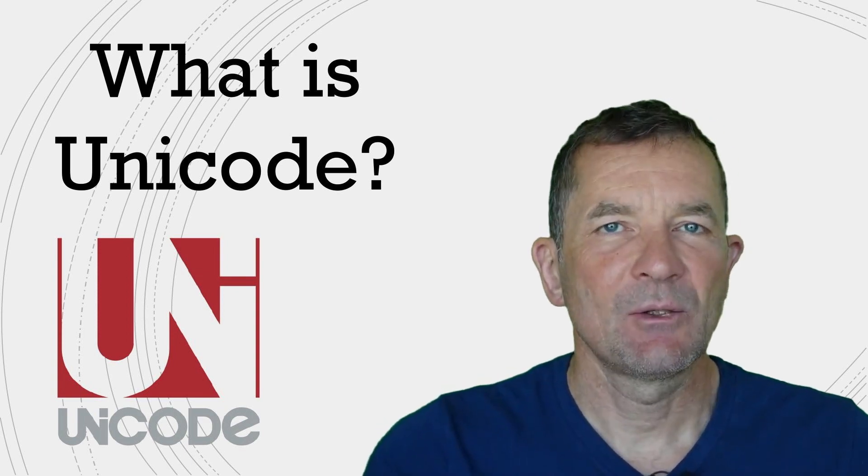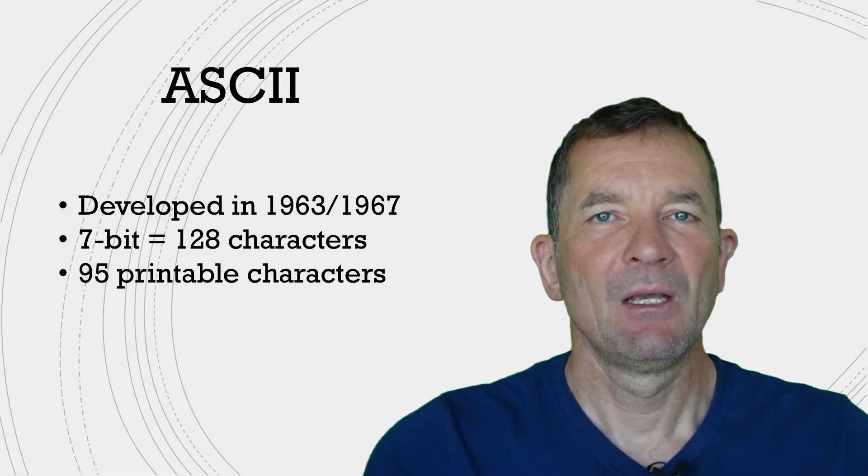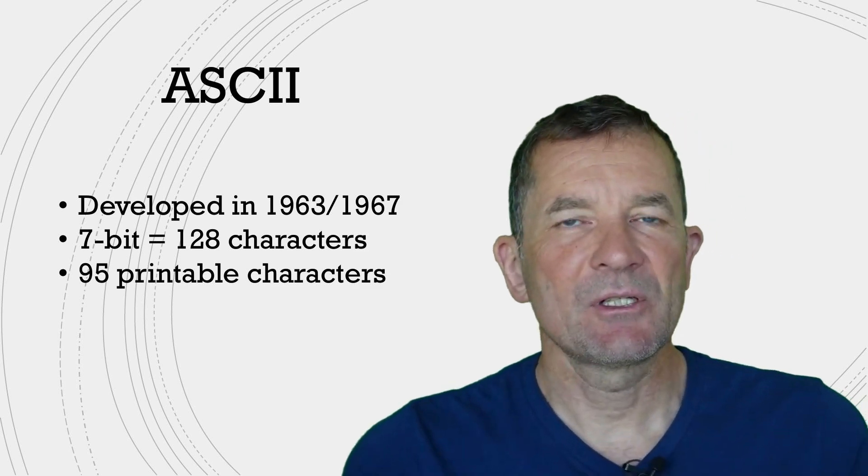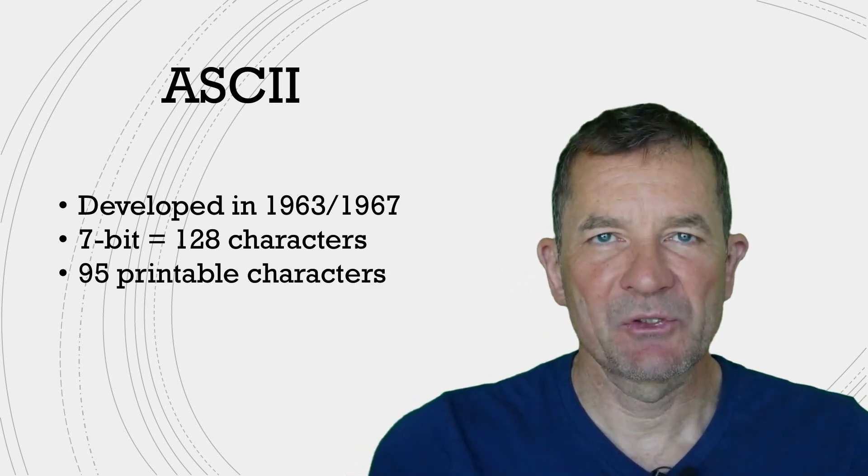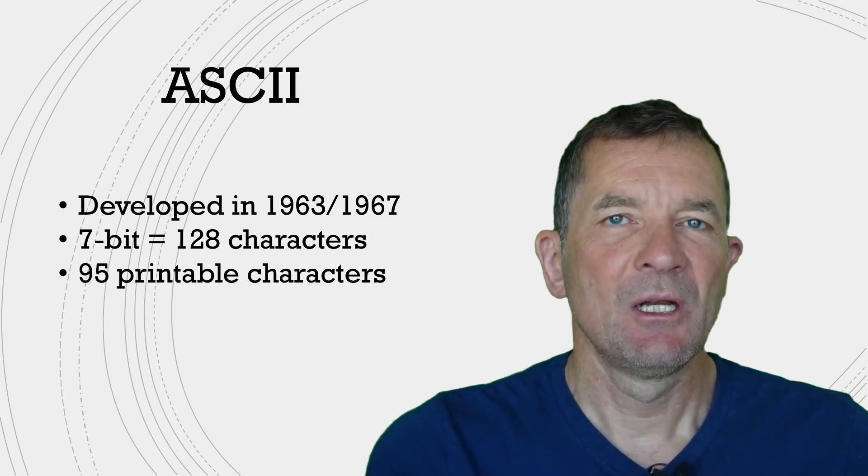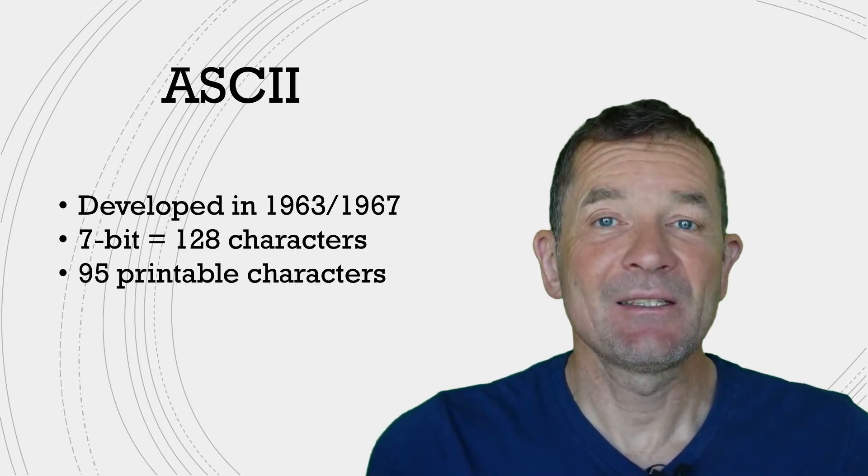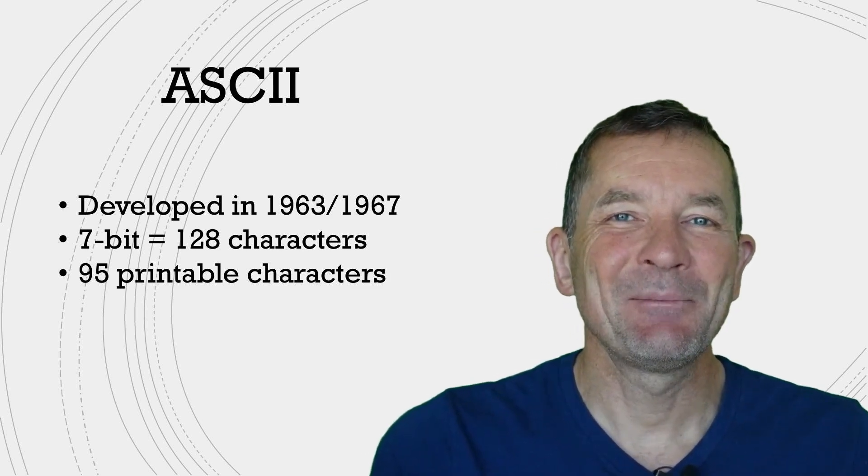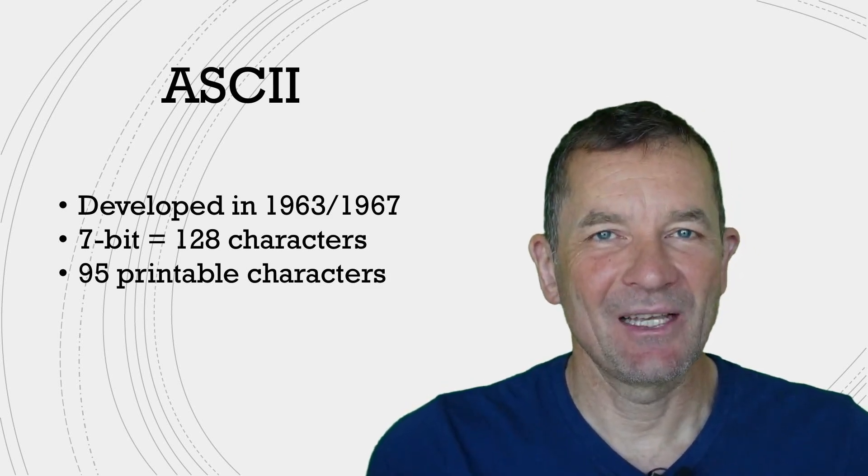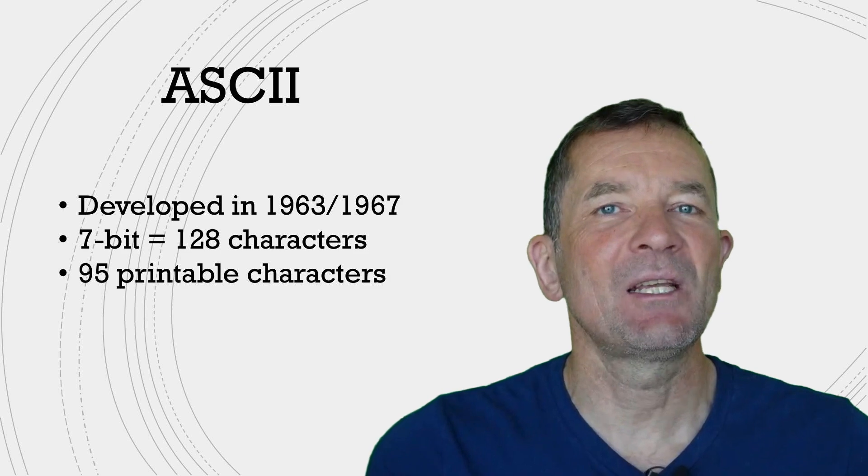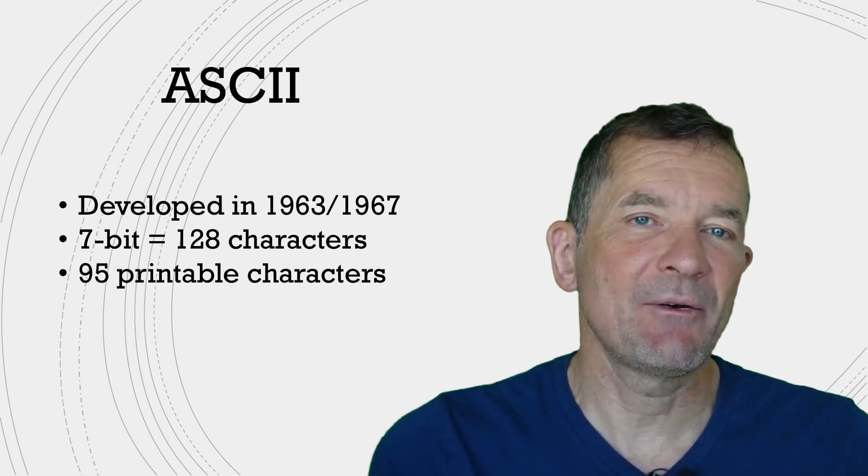Let's get started with some history. One of the first standards in computing in terms of character representation was ASCII. It has been around for a very long time. It started in 1963 and it's a very small character set. It's a 7-bit character set, meaning that it can represent 128 characters.